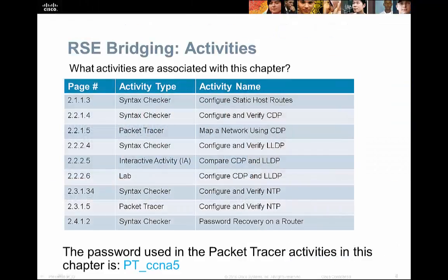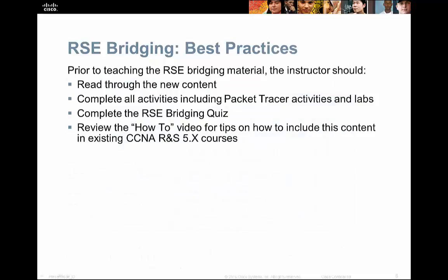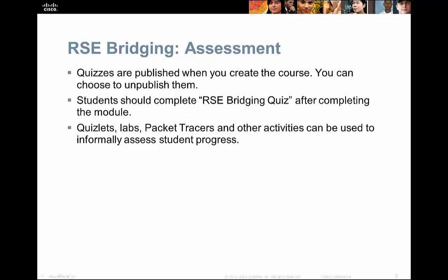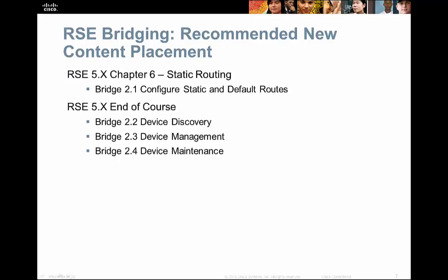Within the planning guide, there's a list of activities including syntax checkers, packet tracer activities, and different interactive activities. There's also information about best practices and information around assessments — quizzes are published by default and you may choose to unpublish them. There's also a slide on recommended new content placement. For example, for Routing and Switching Essentials 5.x, chapter 6 covers static routing, and the bridge 2.1 content on configuring static and default routes fits best there. Other new content that doesn't have similar content in the 5.x course is recommended to go at the end.